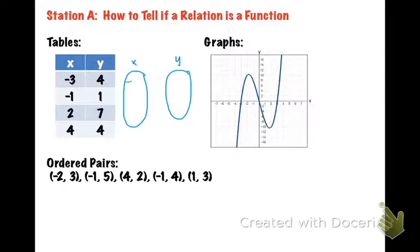So the x's are going to be negative 3, negative 1, 2, and 4. The y values—the 4 happens twice, so we're only going to write it one time. So it would be 1, 4, and 7.